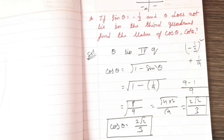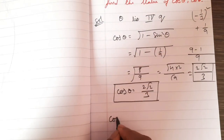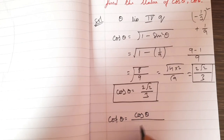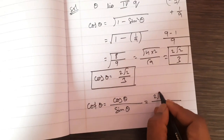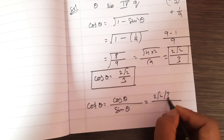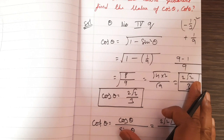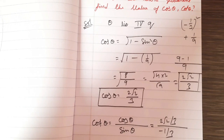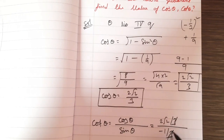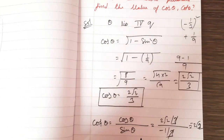This is the cos value — chalala simple. Now I will calculate cot value. So what is cot θ? It equals cos θ by sin θ. So what is cos θ? It is 2√2 by 3. And sin θ is minus 1 by 3. So cot equals cos by sin: 2√2 over 3 divided by minus 1 by 3 — 3 and 3 cancel — so cot θ equals minus 2√2.